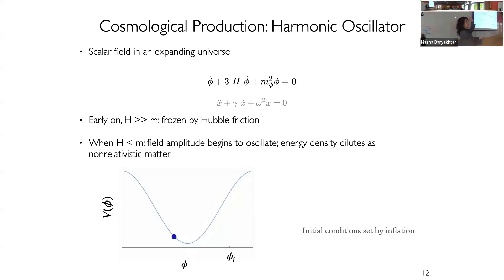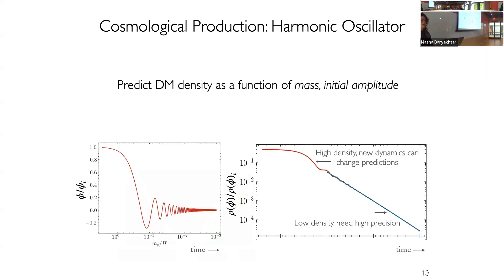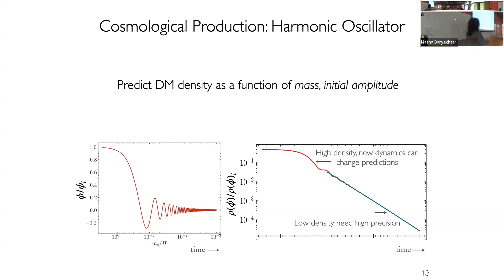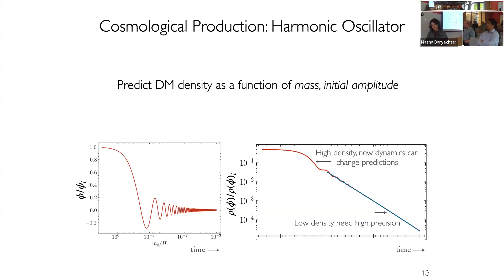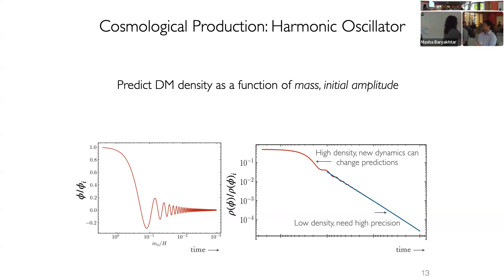Early on, the potential for the field looks like this. You start with some initial condition set by early universe dynamics, and then it oscillates around as the universe cools and the friction term becomes less relevant. You can think of the dark matter density or the field amplitude as evolving with time starting at some initial condition — a very high density — and then evolving and oscillating around this diluting density, which matches very well with what we expect from regular cold dark matter.